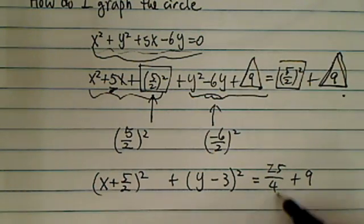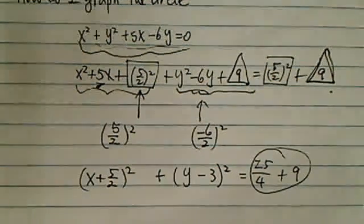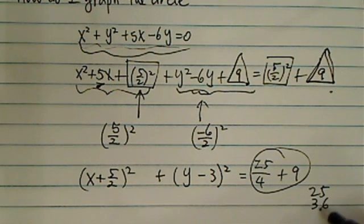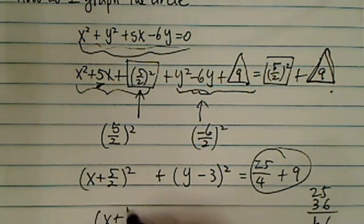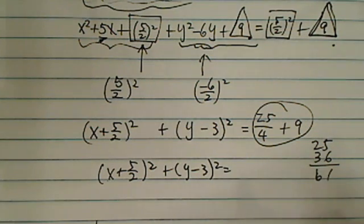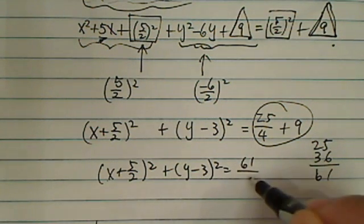Here we're almost done. So let's complete it and finish this one. I have 25 plus 36. I have 61. So basically I have x plus 5 over 2 squared plus y minus 3 squared equals 61 over 4.